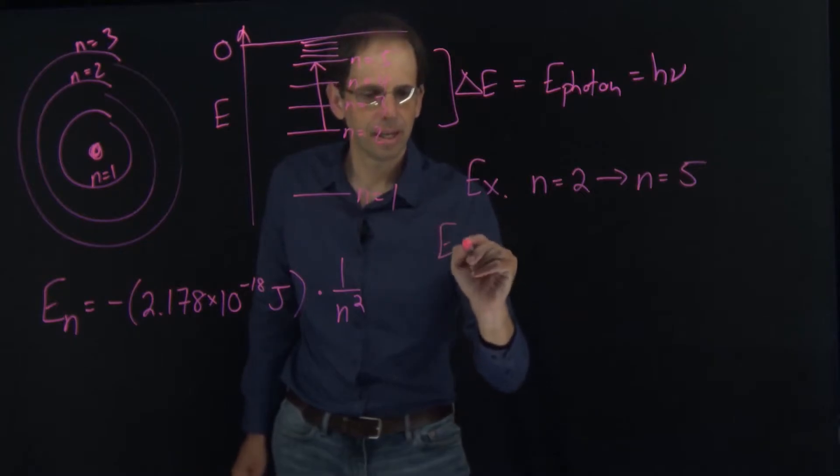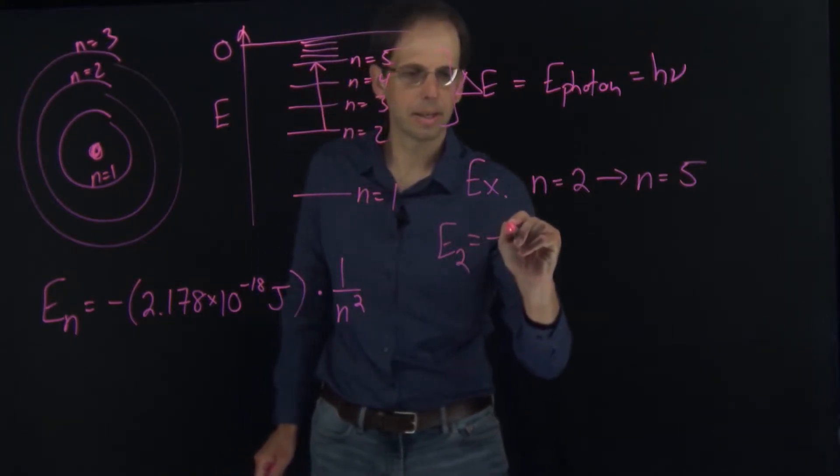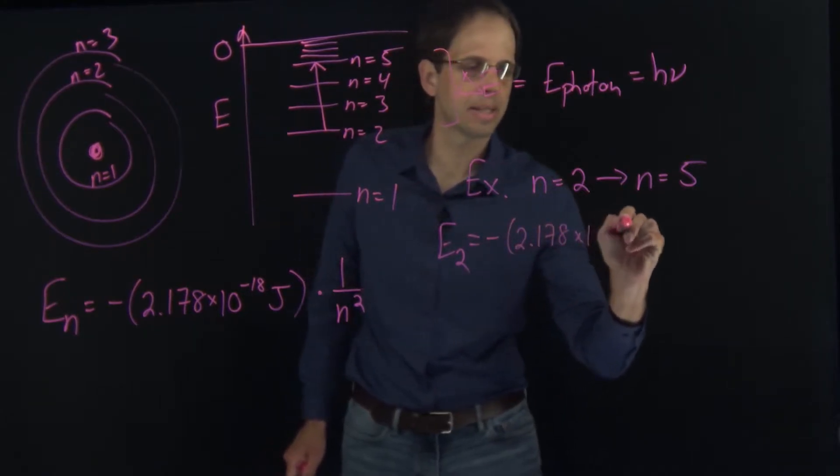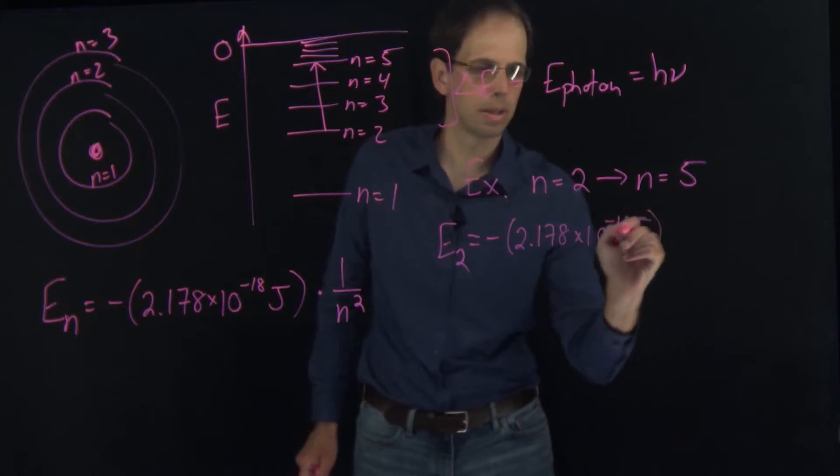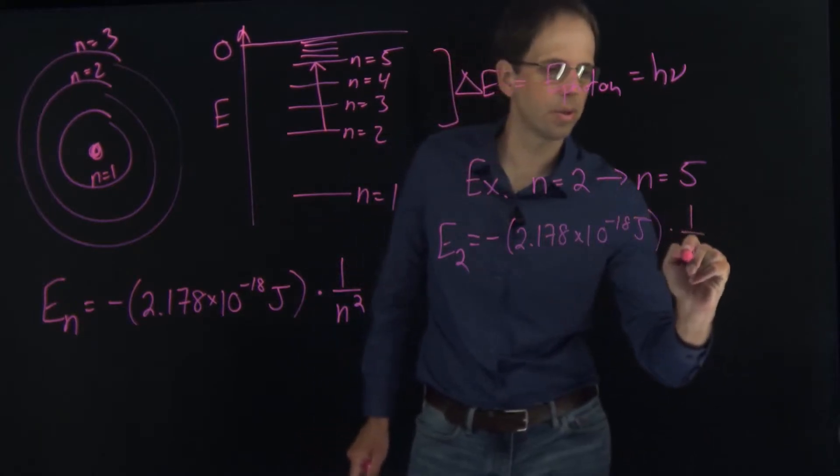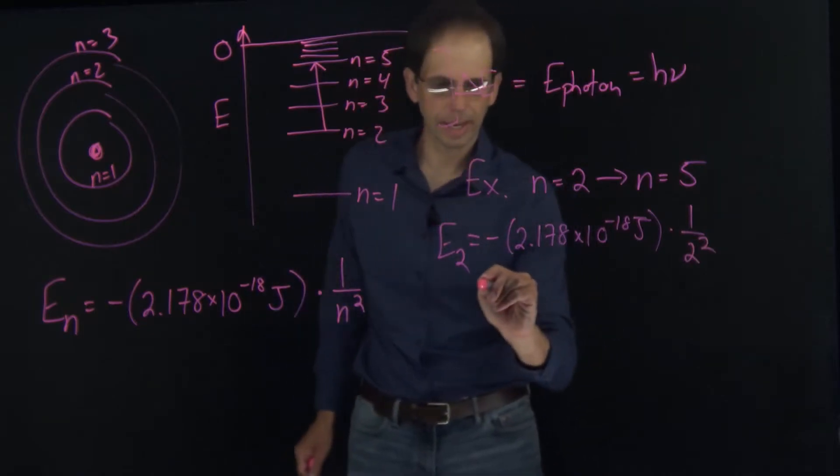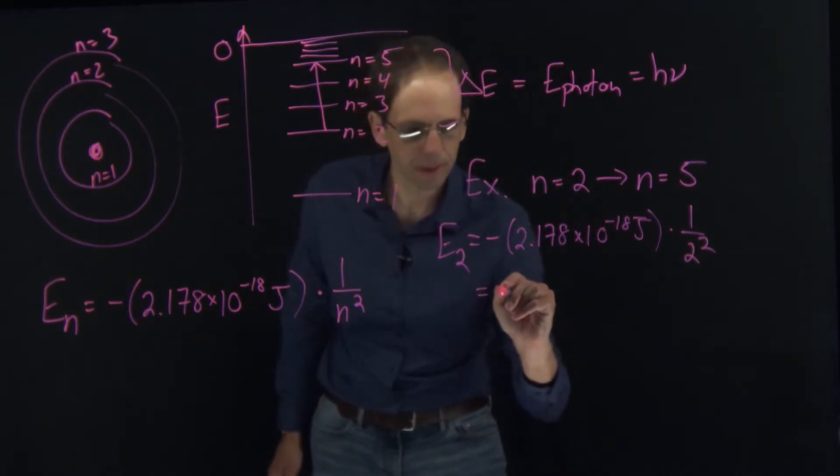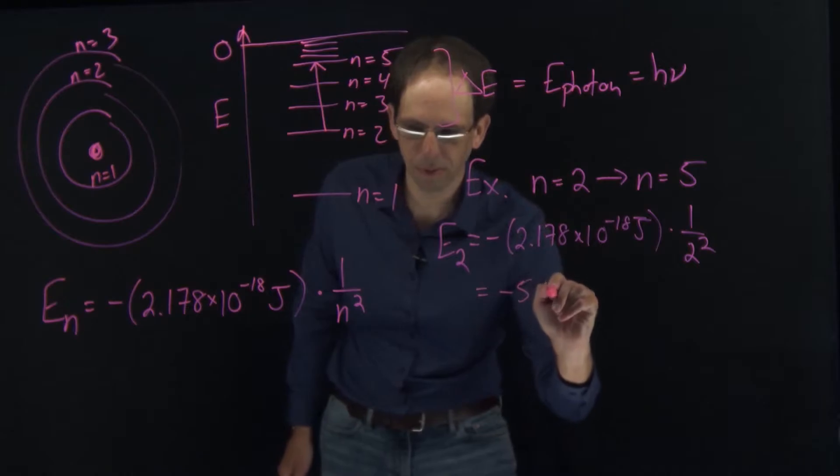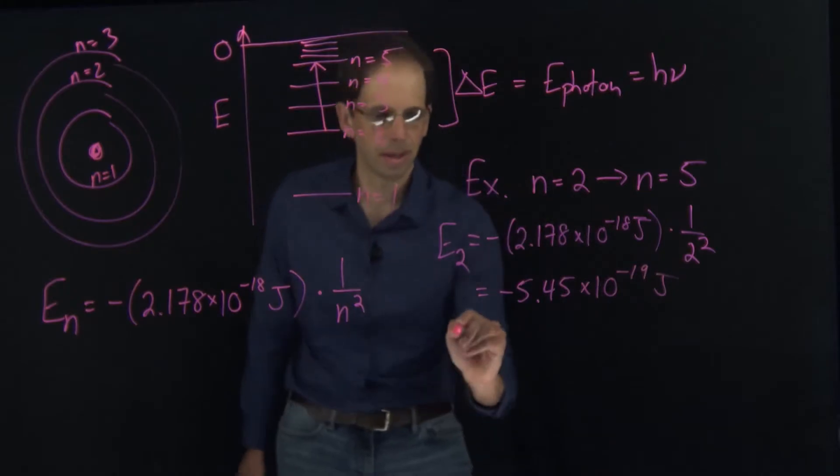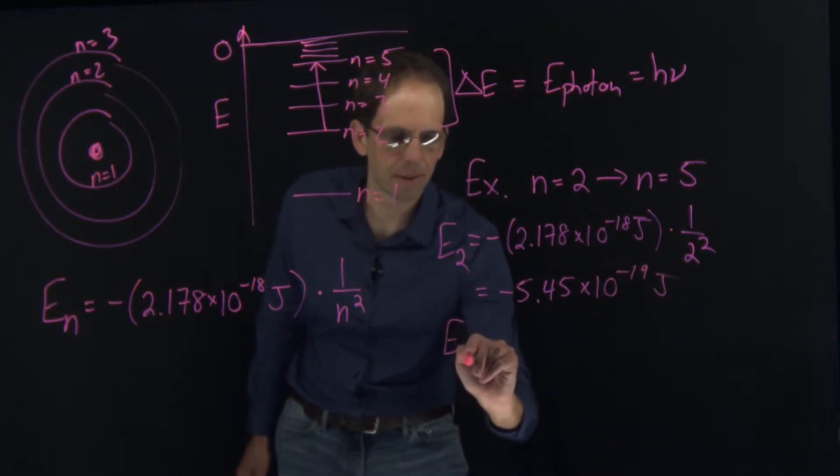If I want to calculate the energy of the n equals 2 state, it's going to be minus 2.178 times 10 to the minus 18 joules times 1 over 2 squared, because n equals 2, and I get negative 5.45 times 10 to the minus 19 joules.